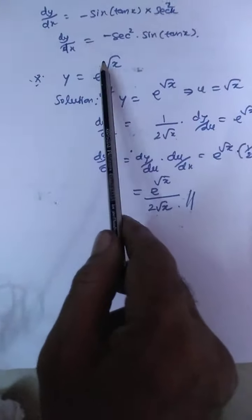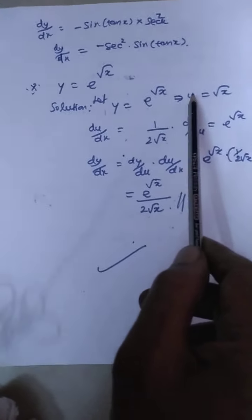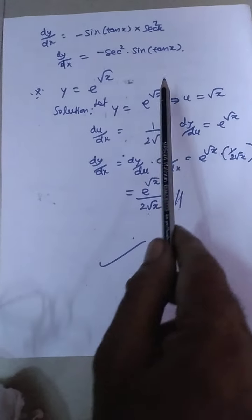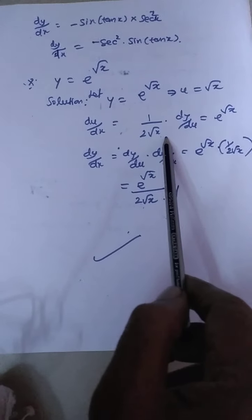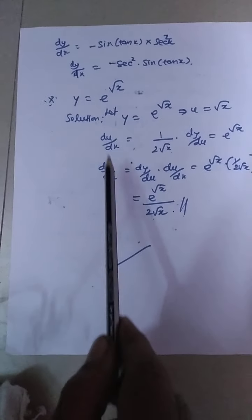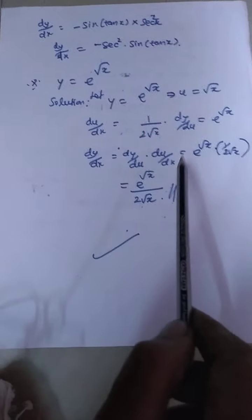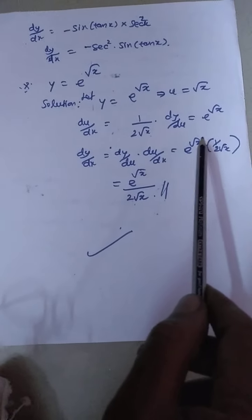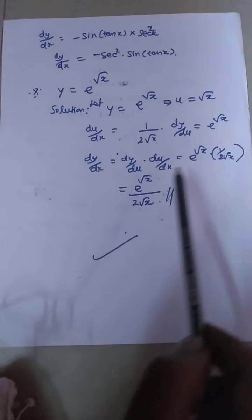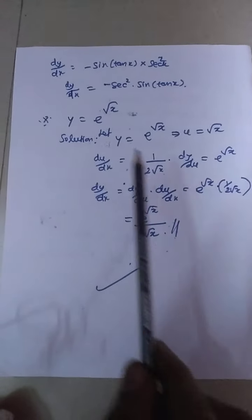Next, Question 4: y = e^(√x). Let u = √x, so y = eᵘ. Then du/dx = 1/(2√x) and dy/du = eᵘ = e^(√x). By the chain rule, dy/dx = dy/du · du/dx = e^(√x) · 1/(2√x) = e^(√x) / (2√x). That is the answer.